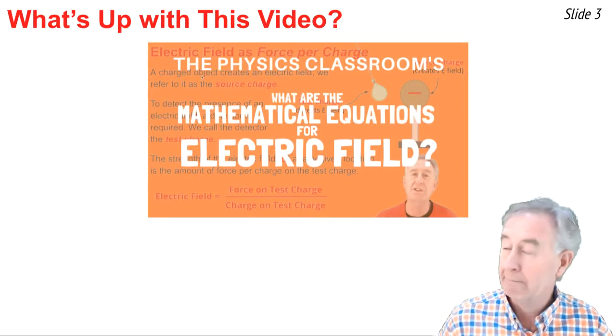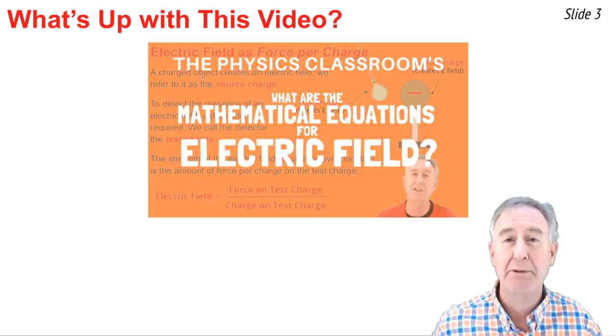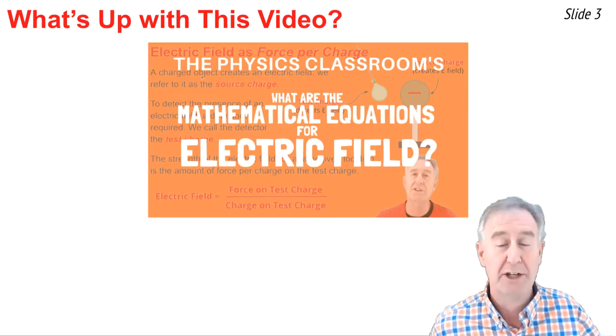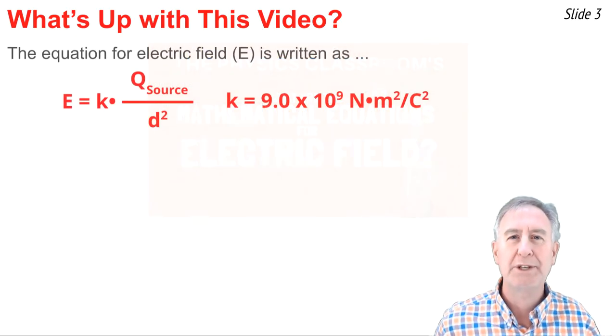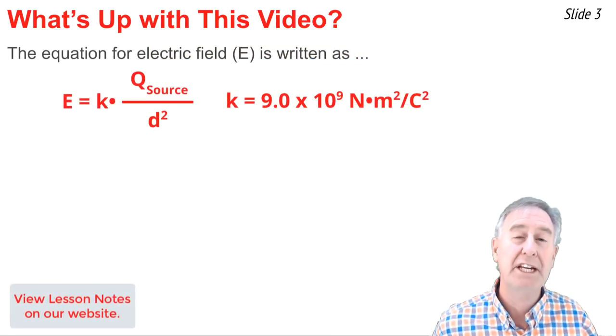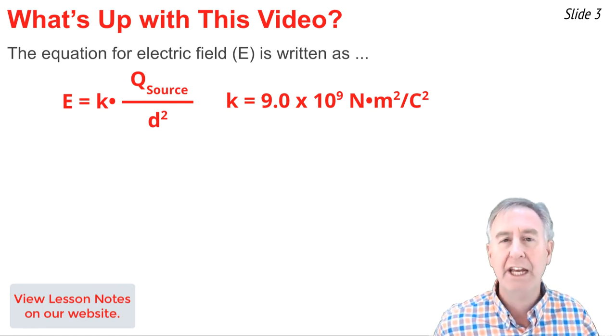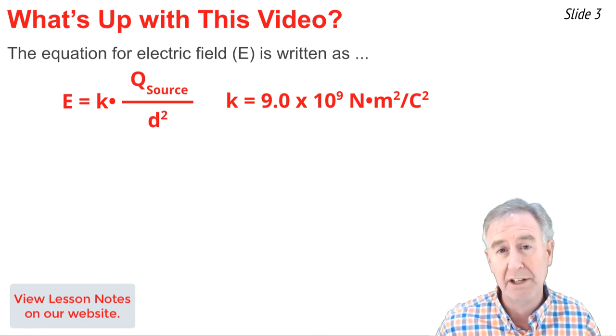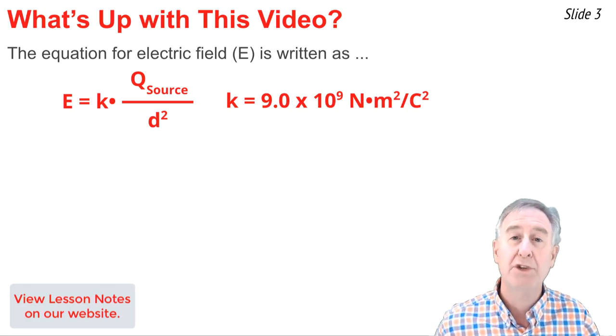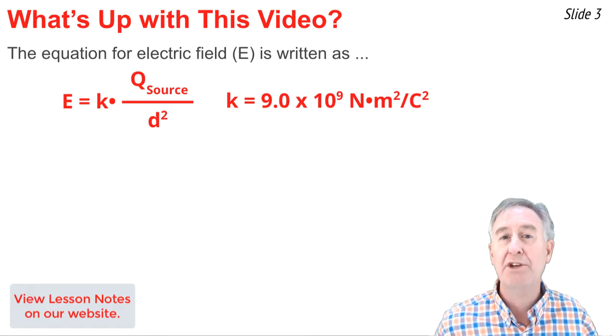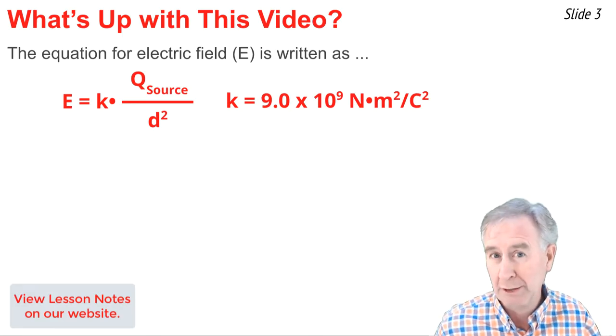In a previous video, I discussed the mathematics of electric field. You'll find a link to this video in the description section below. Here's what we learned: the electric field at any location around a source of charge is equal to a proportionality constant k, whose value is given, multiplied by the quantity of charge on the source that creates that electric field, divided by the separation distance from that location to the center of the source charge.